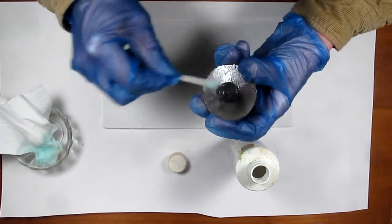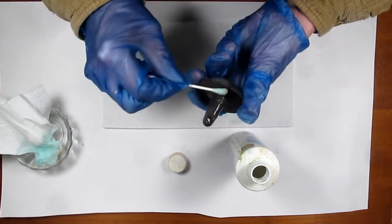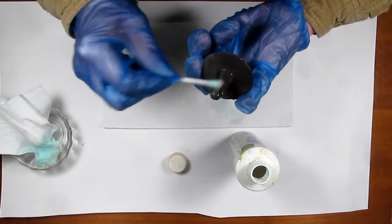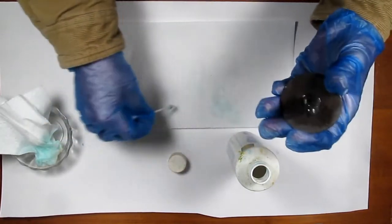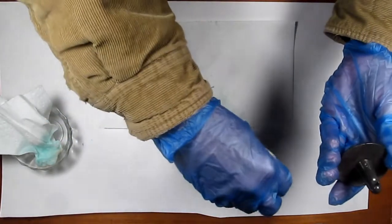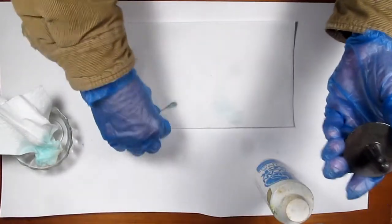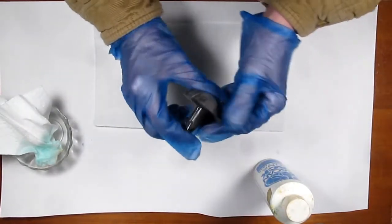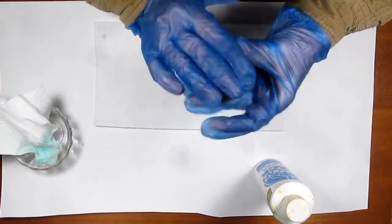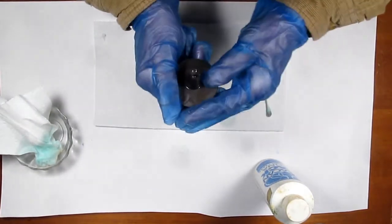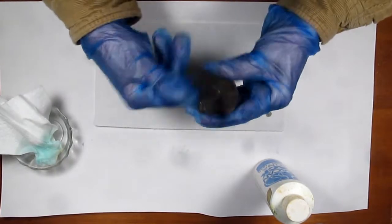You can see. And there you have it. One shiny 12 ounce lead decoy weight, no longer shiny. It looks like it's been hunted over for years.